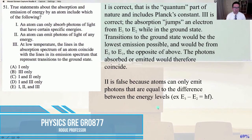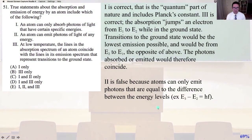Number 51, true statements about the absorption and emission of energy by an atom include which of the following: Number one, an atom can only absorb photons of light that have certain specific energies. Number two, an atom can emit photons of light of any energy. Number three, at low temperature the lines in the absorption spectrum of an atom coincide with the lines in its emission spectrum that represent transitions to the ground state.